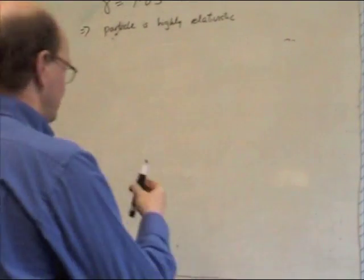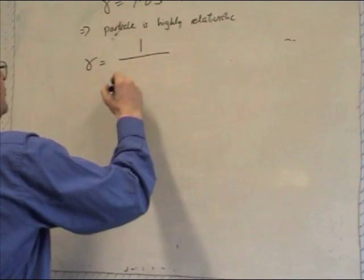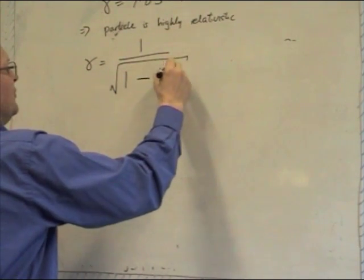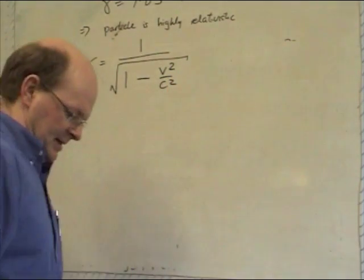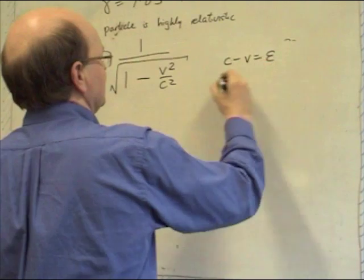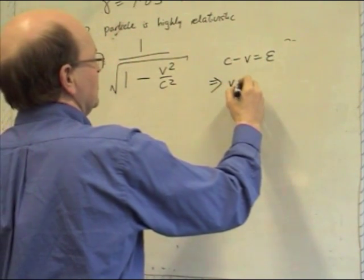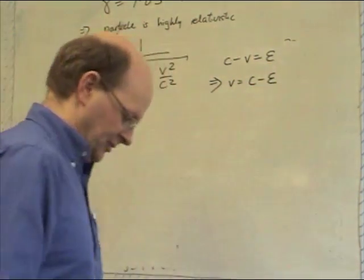So if we write gamma equals 1 over the square root of 1 minus v squared upon c squared and write that c minus v equals epsilon, which implies that v equals c minus epsilon. I'll just rearrange that.